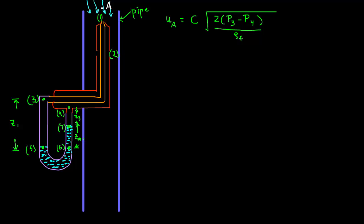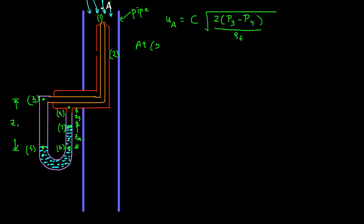Now let's develop an expression for pressures in the U-tube manometer. Since locations 5 and 6 are at the same elevation, the pressures at those locations must be equal. The pressure at location 5 is P3 plus rho F times G times Z1, which accounts for the fluid between locations 3 and 5.